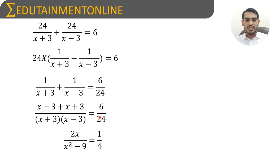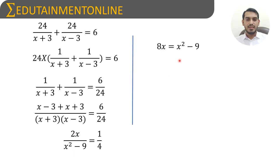Cross multiplying: 4 times 2x is 8x, and 1 times (x squared minus 9) is x squared minus 9. So 8x equals x squared minus 9. Transposing 8x to the other side gives x squared minus 8x minus 9 equals zero.